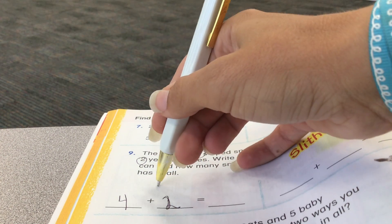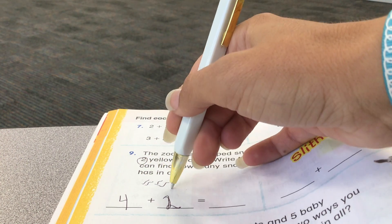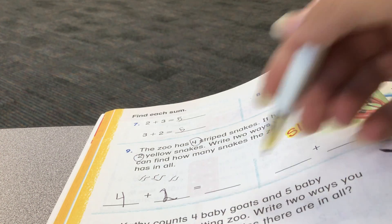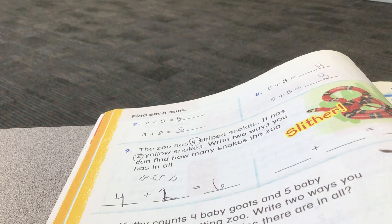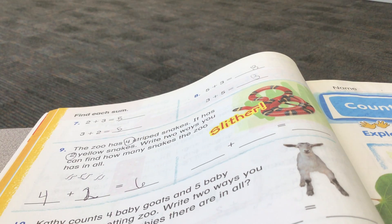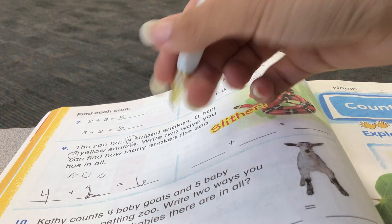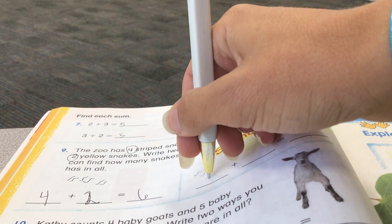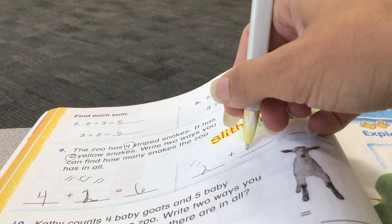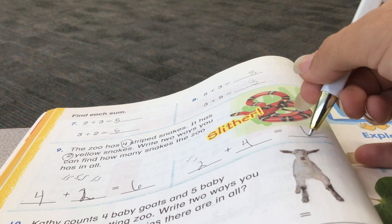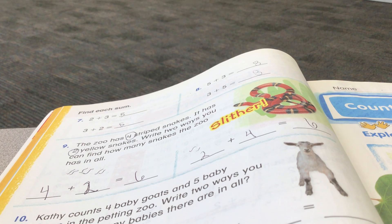4 plus 2. Or I could draw some snakes. 1, 2, 3, 4. And then 2 more snakes. And I have 6 snakes. Now, to draw it another way, I could start with the yellow snakes. I could draw the 2 yellow snakes first. And put the 2 first. And then the 4 striped snakes. And I still have 6 snakes.